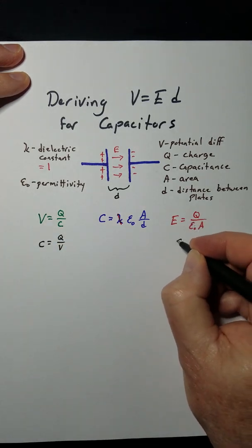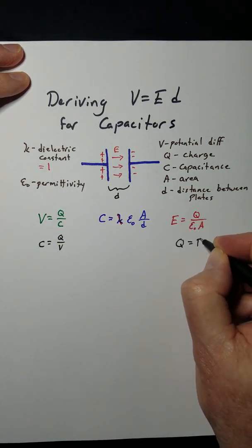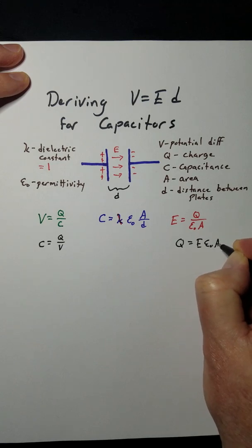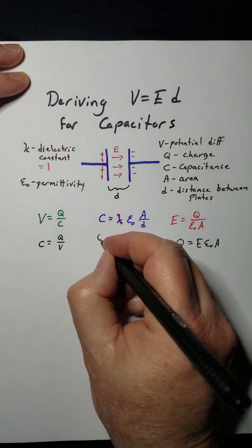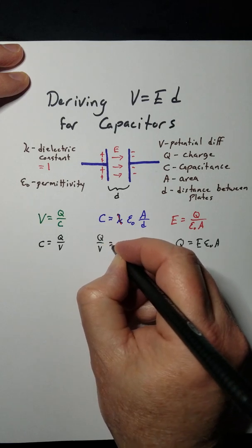And I'm going to go ahead and rearrange this so Q equals E epsilon naught A. I'm going to start plugging them in here, so Q over V takes that place.